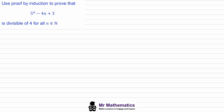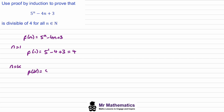Perhaps you want to try this question yourself — pause the video and when you come back we'll go through the worked solution. So, if f of n equals five to the n minus four n plus three, for the basis when n equals one we get five to the one minus four times one plus three. Five minus four plus three is four, so we know this is true for n equals one. For our assumption when n equals k, f of k equals five to the k minus four k plus three, and we assume this is divisible by four.